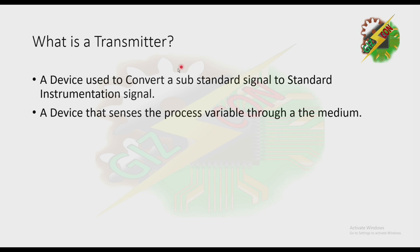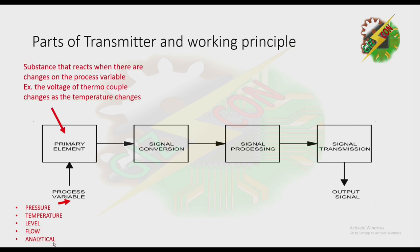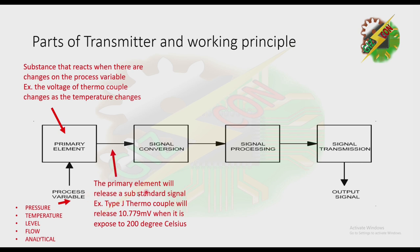Now let's discuss the transmitter. What is a transmitter? A transmitter is a device used to convert a substandard signal to a standard instrumentation signal. It is a device that senses the process variable through the medium. The process variable can be pressure, temperature, level, flow, or analytical. The primary element is the substance that reacts when there are changes in the process variable. For example, the voltage of a thermocouple changes as temperature changes.